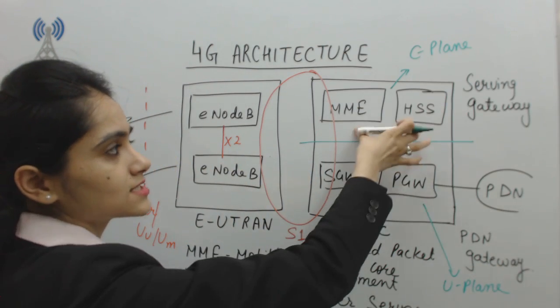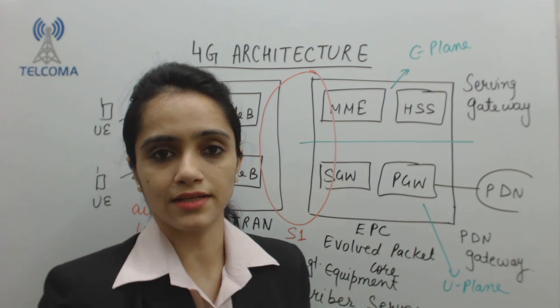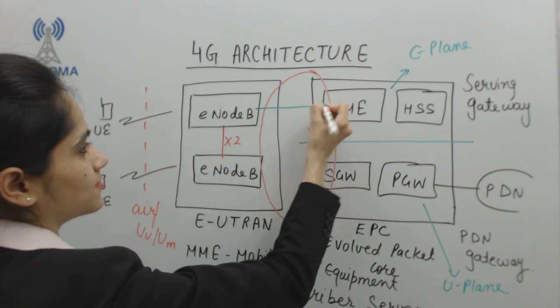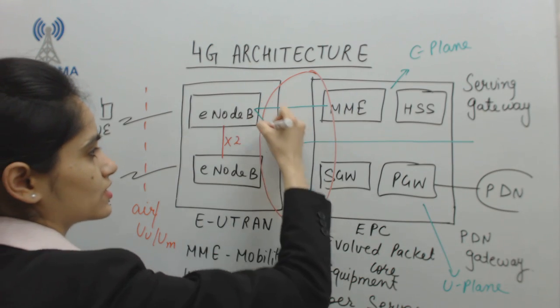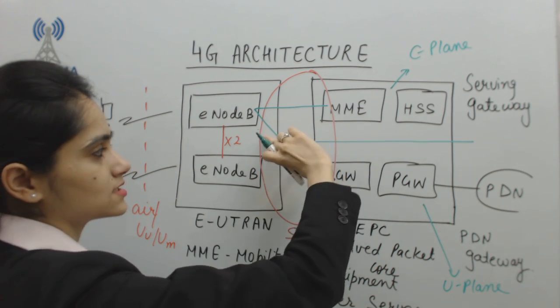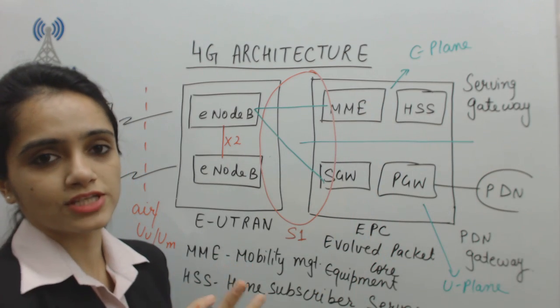C-plane has to deal with signaling and controlling, whereas U-plane has to deal with data. The ENodeB requires connectivity with MME and also requires connectivity with serving gateway, because this is the interface for signaling and this is the interface for data.